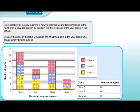Question 21. A newly appointed year two teacher looked at the number of languages spoken by pupils in three classes of the year group. Click on the class which has half of the pupils in the year group who speak exactly two languages. This looks harder than it is — they only care about two languages being spoken. In total there are 18 pupils who speak two languages in the year group, and half of them — 9 — are from class W. So our answer is class W.